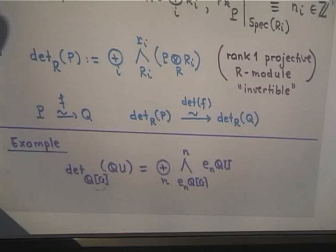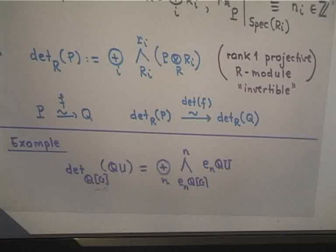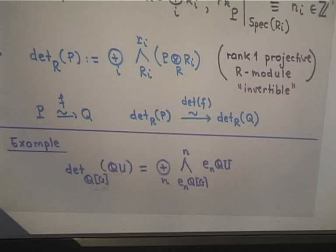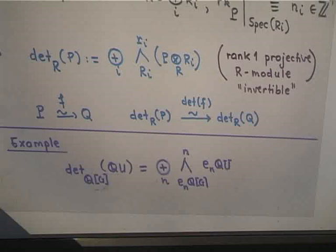An example relevant to our situation: recall the decomposition of QU into eigenspaces, where the dimension of each eigenspace E_N · QU is precisely N. If you think of the ring R as Q[G] — which is a sum of fields, so every module is projective — then QU is projective and the determinant is the sum over all N of the N-th exterior power over E_N · Q[G] of E_N · QU.